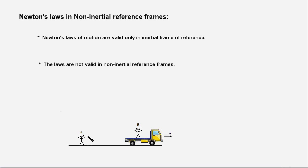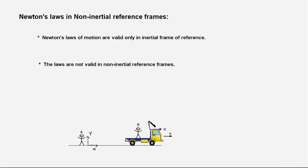The reference frame attached to B or the truck is a non-inertial one because it is accelerating. We attach reference frame X and Y to the truck, and therefore this reference frame would be a non-inertial reference frame because it is accelerating to the right with an acceleration A.